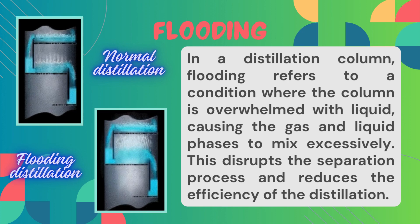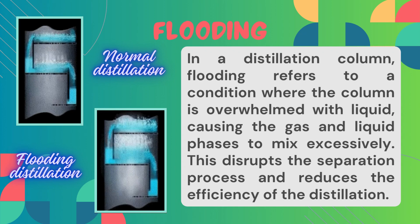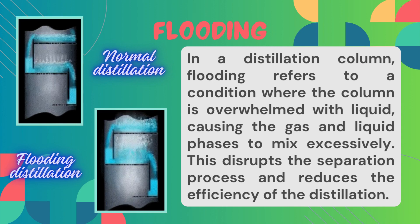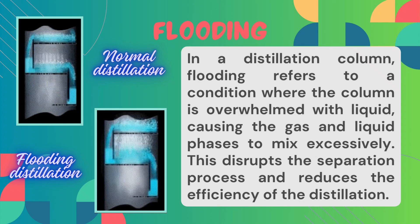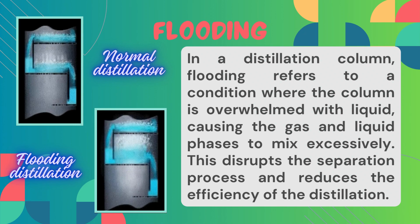Monitoring the liquid and vapor flow rates, maintaining proper column operating conditions, and ensuring the design integrity of column internals are essential measures to prevent flooding. In simple words, flooding is a phenomenon which severely affects the distillation separation process by increasing energy consumption and reducing purity. In a distillation column, liquid and vapor contact is the most crucial part, but flooding causes an imbalance in that vapor-liquid contact.